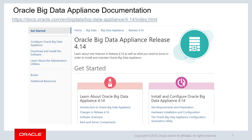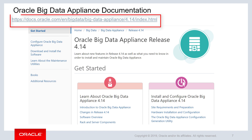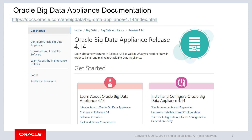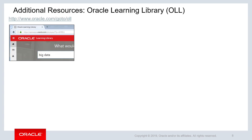This slide shows the Oracle Help Center page for the Oracle Big Data Appliance, or BDA, version 4.14, which was the latest version available at the time of this recording. You can find many useful Big Data resources on the Oracle Learning Library, or OLL.